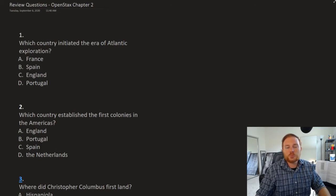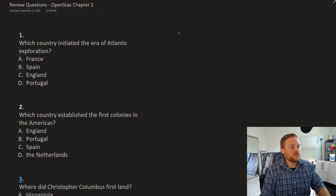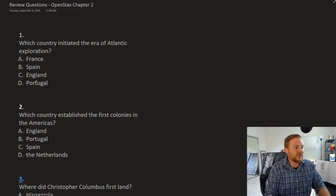All right, this is OpenStax U.S. History Chapter 2, the review questions. Beginning with question number one, which country initiated the era of Atlantic exploration? The answer is D, Portugal.